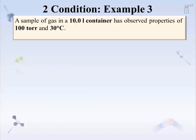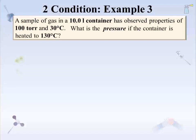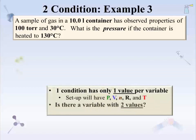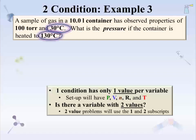Example 3. A sample of gas in a 10.0-liter container has observed values of 100 torr and 30.0 degrees Celsius. What is the pressure if the container is heated to 130 degrees Celsius? What type of gas problem is this — one condition or two conditions? Is there a gas property with two stated values? According to the problem, there are two different temperatures, so this is a two-condition problem, and the variables will have subscripts of 1 and 2.